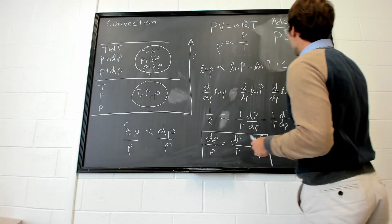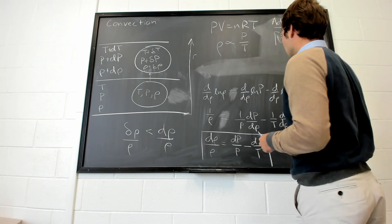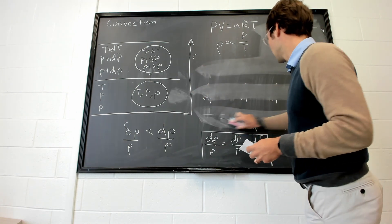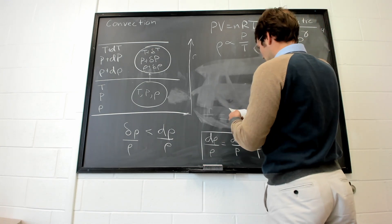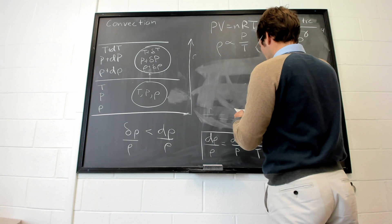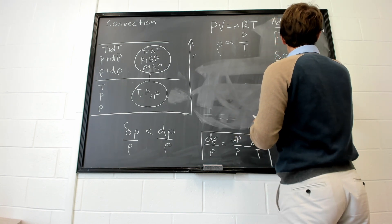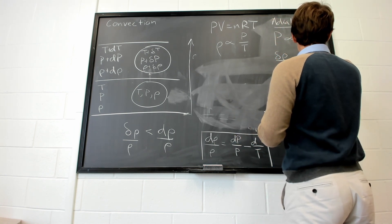We can do the same thing over here. With adiabatic index, we get delta rho over rho equals 1 over gamma, delta P over P.